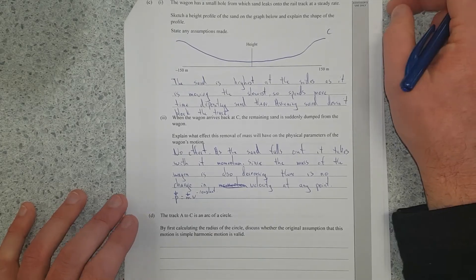So I've written no effect. As the sand falls out, it takes with it momentum. Since the mass of the wagon is also decreasing, there is no change in velocity at any point. Momentum decreasing, mass decreasing, velocity is the same. Now that I reread this question, I just realised the wagon wasn't moving at all. So the other explanation is at C, it loses all that mass. If it's not moving, it's not really losing anything. You could just swap it out with a lighter load, and the accelerations are still going to be the same because it's gravity that's accelerating it.